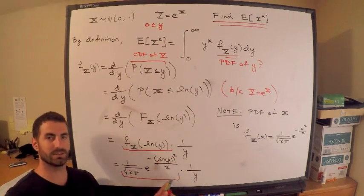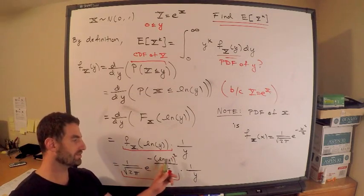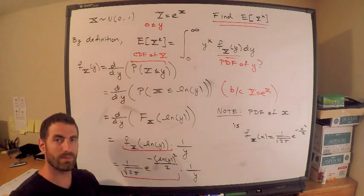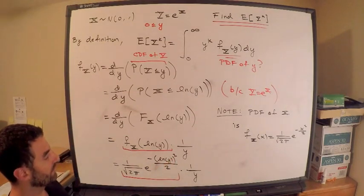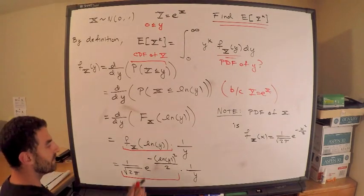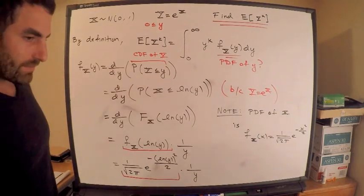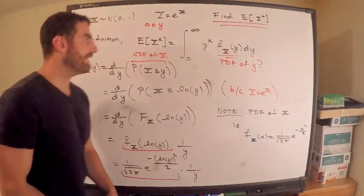This right here is the CDF of X evaluated at ln Y. This is the PDF of X, right? Because it's lowercase. It's the derivative. I took the derivative. Lowercase f. PDF of X evaluated at ln Y divided by 1 over Y. Yeah, because that's the derivative of ln Y. You guys are calc 2 experts, so you absolutely know this. You agree. Now what? Well, we need the PDF of X.